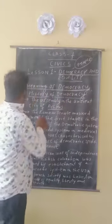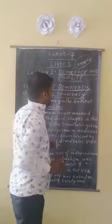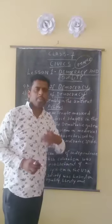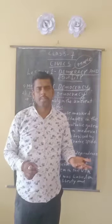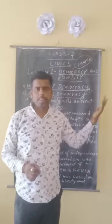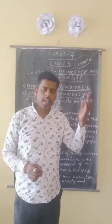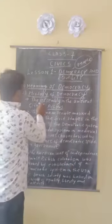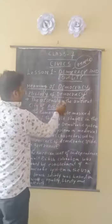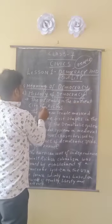The second point is the history of democracy. From where did democracy arise? Democracy arose from Athens. You can see the assembly of the ancient city of Athens.